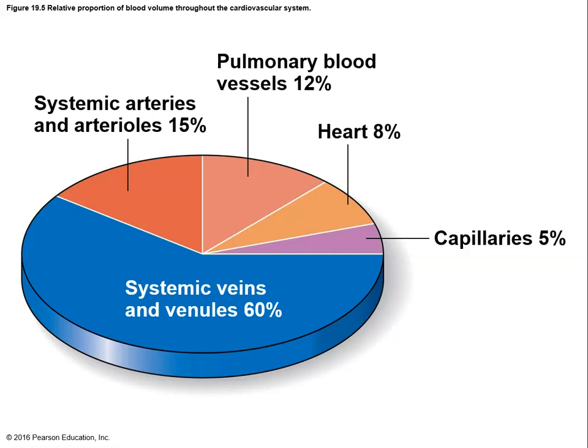Looking at blood distribution throughout all vessel types, about 60 percent of the body's blood is found in the veins and venules. This makes sense because veins and venules experience the lowest blood pressure and are farthest from the heart, so there is more pooling of blood there compared to arteries and pulmonary blood vessels.